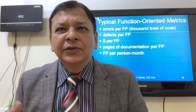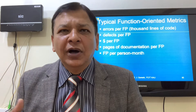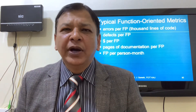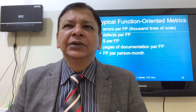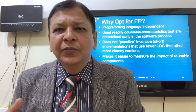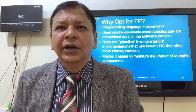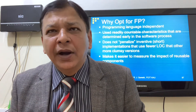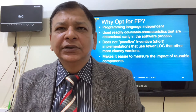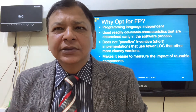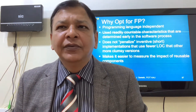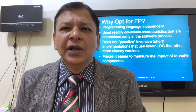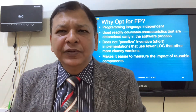Typical function-oriented metrics include: errors per function point, cost per function point, pages of documentation per function point, and function points per person-month. Why opt for function points? They are programming language independent, use readily available characteristics determined early in the software process, do not penalize inventive short implementations that use fewer lines of code, and make it easy to measure the impact of reusable components.